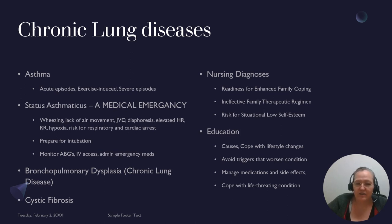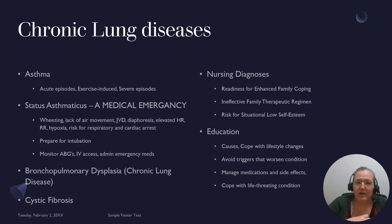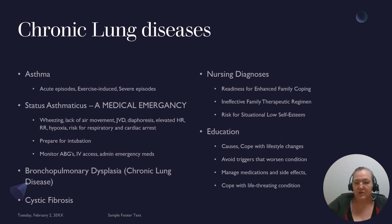Other signs of status asthmaticus: JVD, diaphoresis, tachycardia, tachypnea, hypoxia, and risk of cardiac arrest. Prepare to intubate the child, ideally before status asthmaticus is fully established. ABGs will be needed to assess for respiratory acidosis. Emergency medications include epinephrine. For very mild cases, Benadryl may suffice; more severe cases require epinephrine.